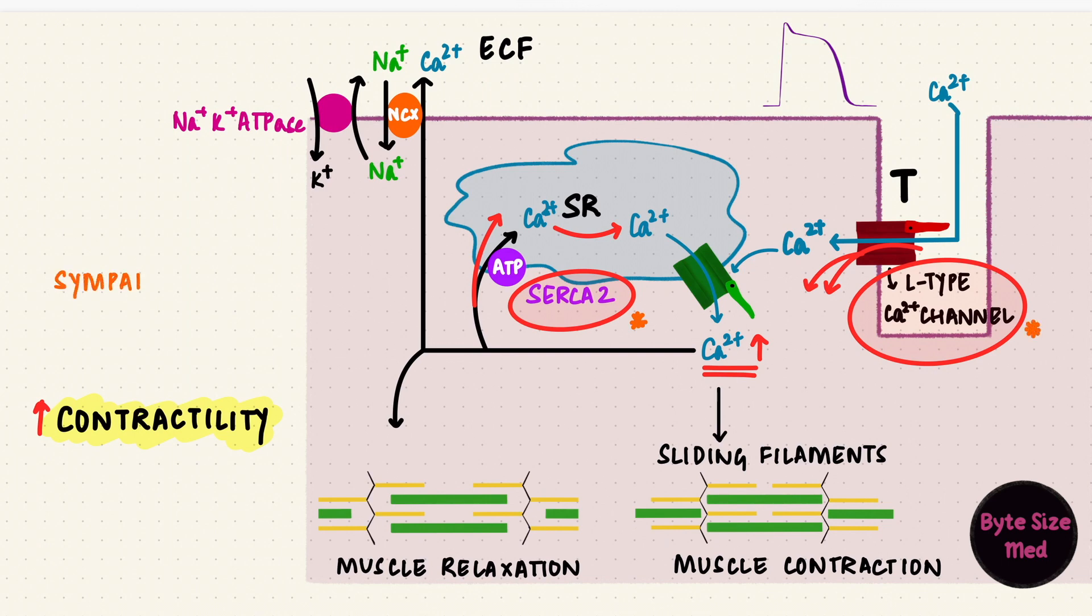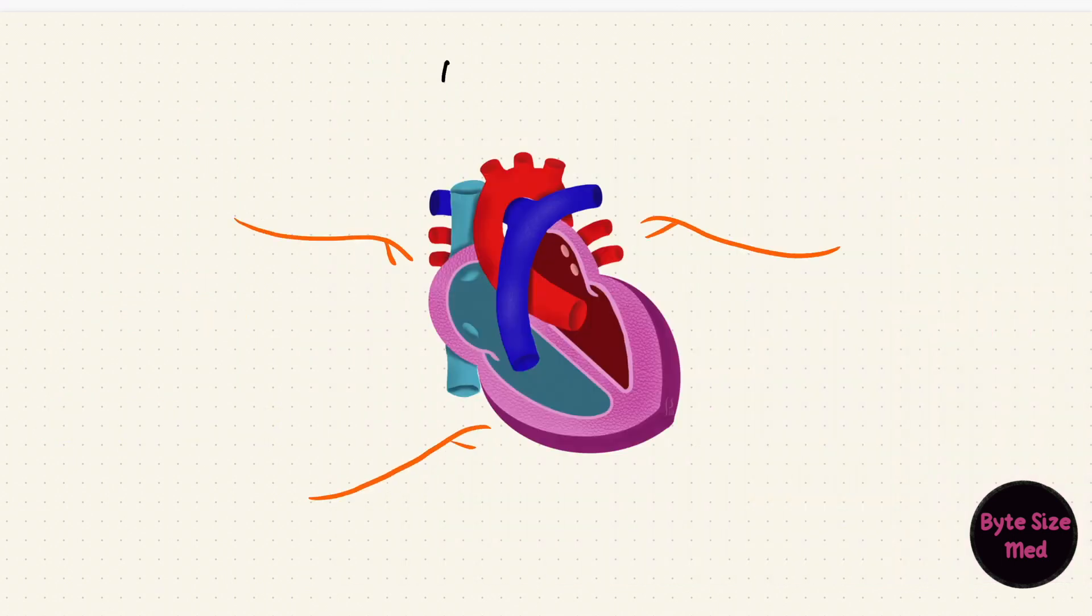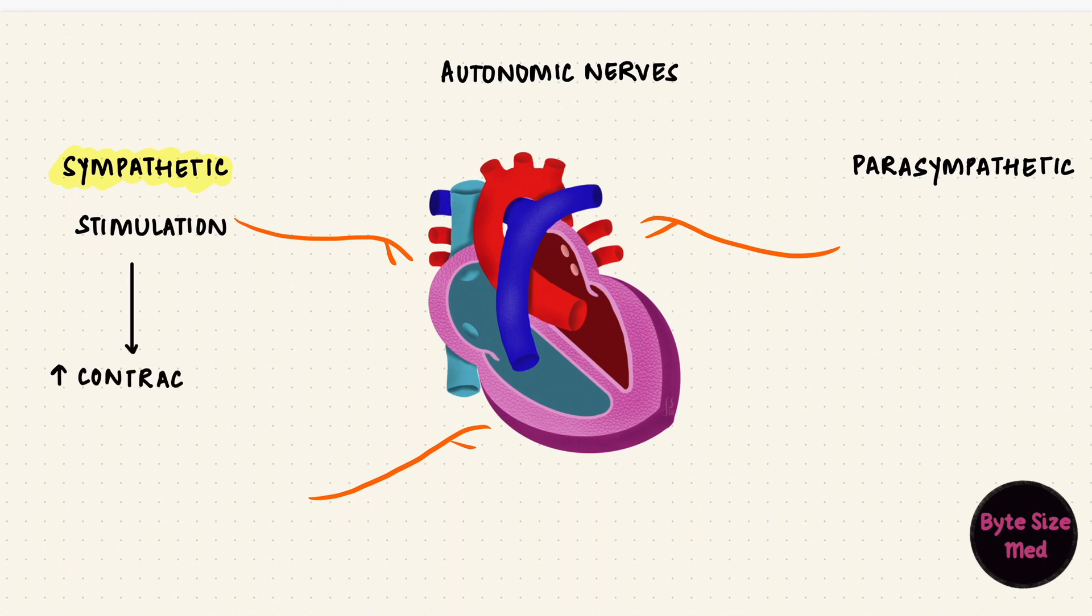This can happen with phosphorylation of these channels, which sympathetic stimulation does. Remember that the heart is supplied by autonomic nerves: the sympathetic and parasympathetic nervous system. Sympathetic stimulation can increase contractility, so they're said to have a positive inotropic effect. Inotropism is the term used for contractility. More contractility means a positive inotropic effect.